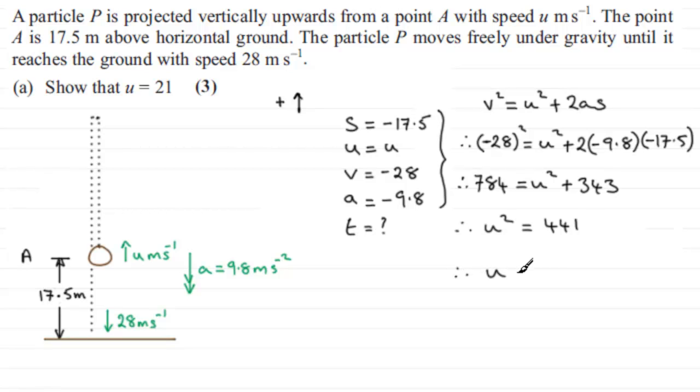Then we need to subtract 343 from both sides. That will give us u squared equals 441. Square root both sides, you get u equals the square root of 441. Now when you square root a value, it would normally be plus or minus.